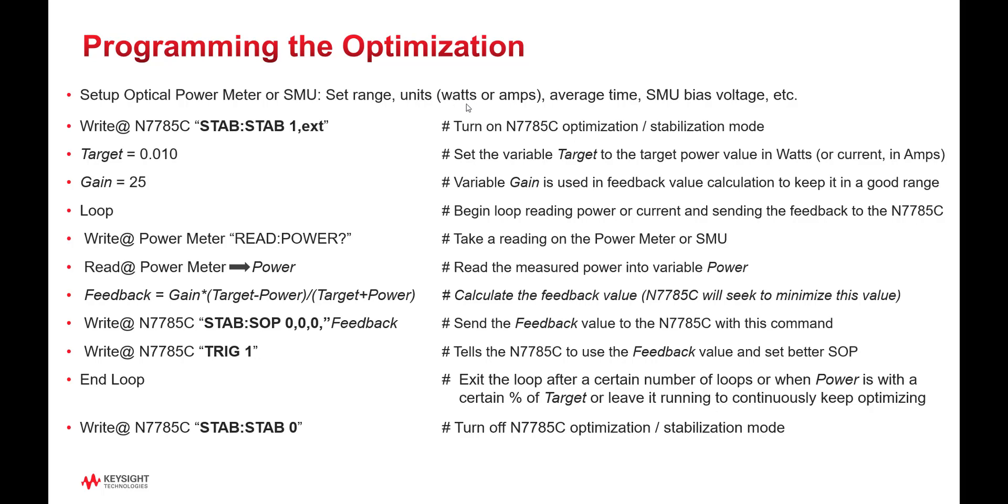Many optical power meters can read in dBm or watts, so set it to watts, a linear scale. You might set the averaging time. If you're using an SMU, you may be setting the DC bias voltage to the photodiode.